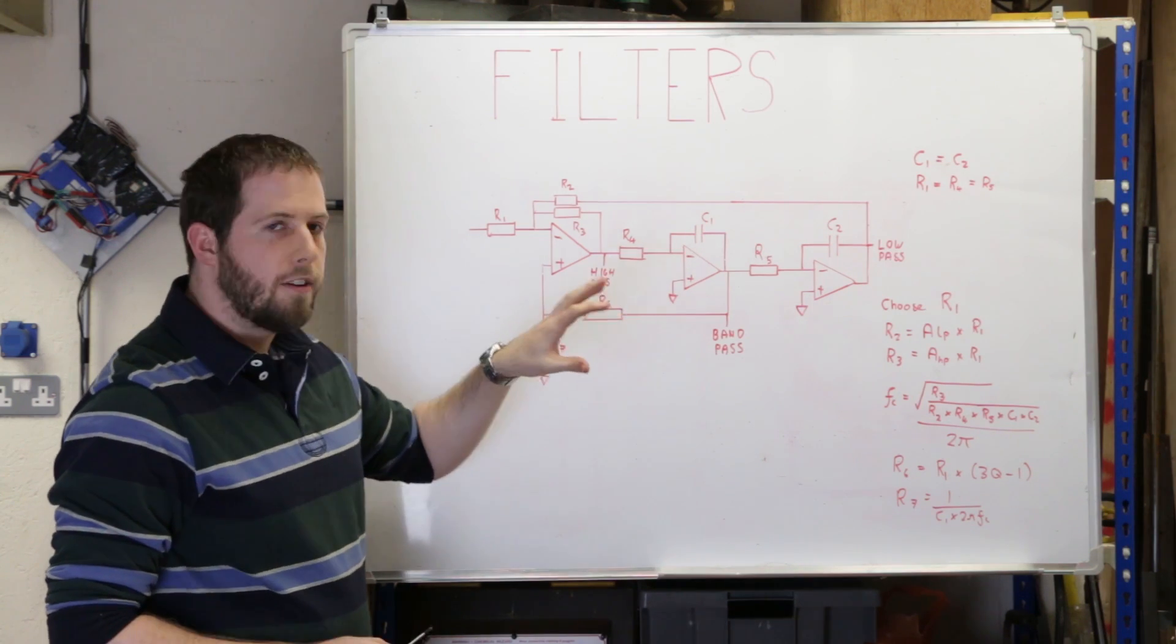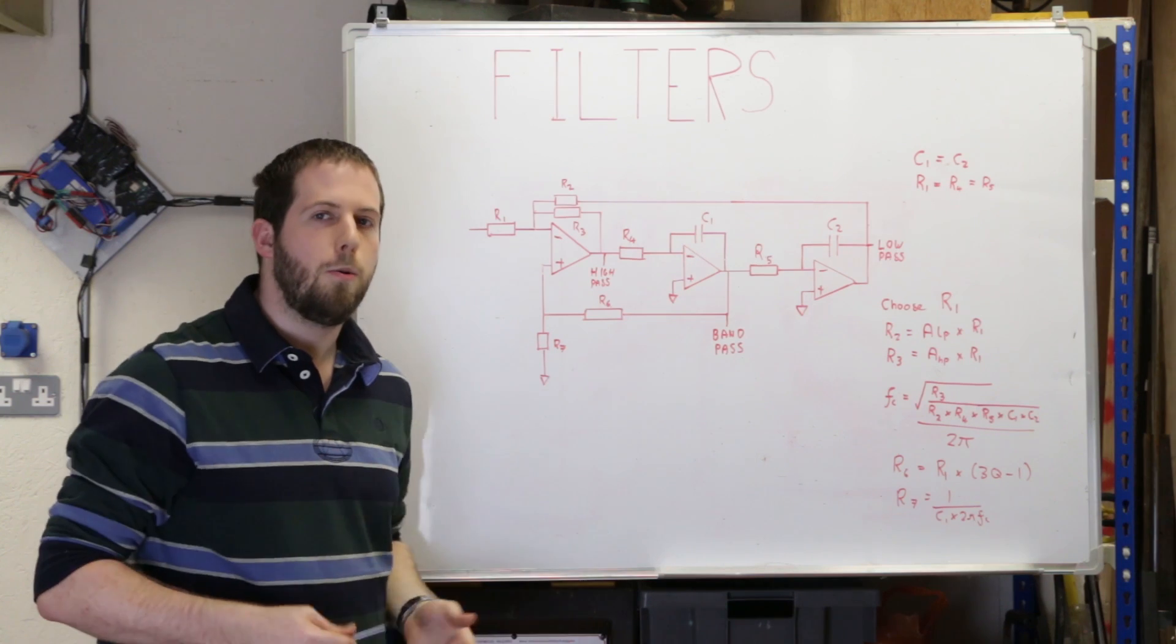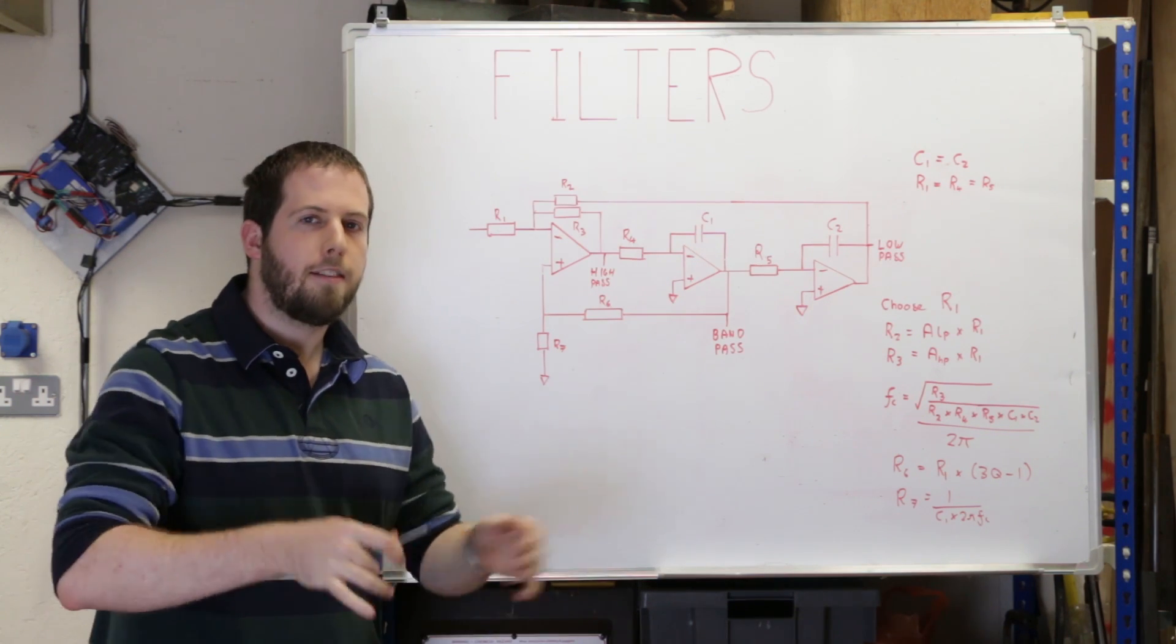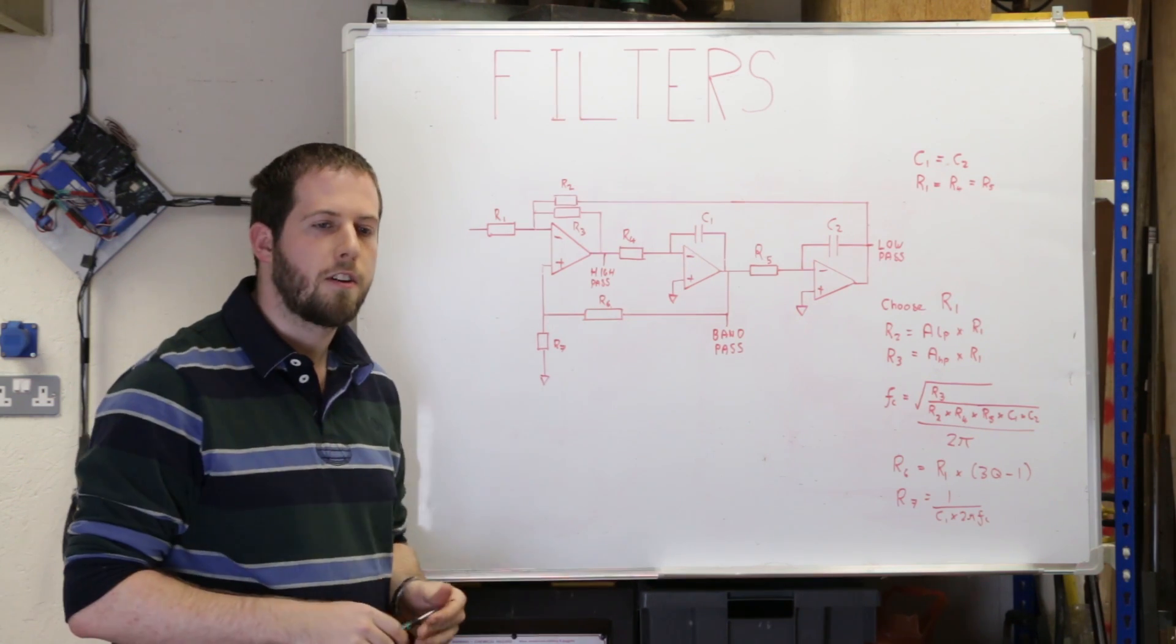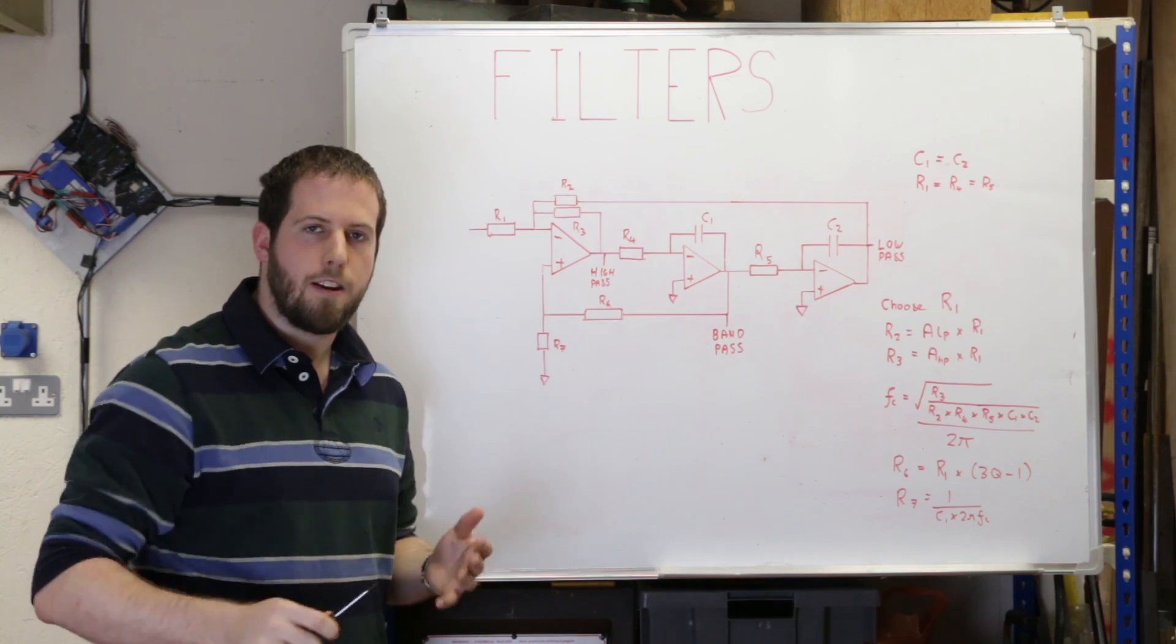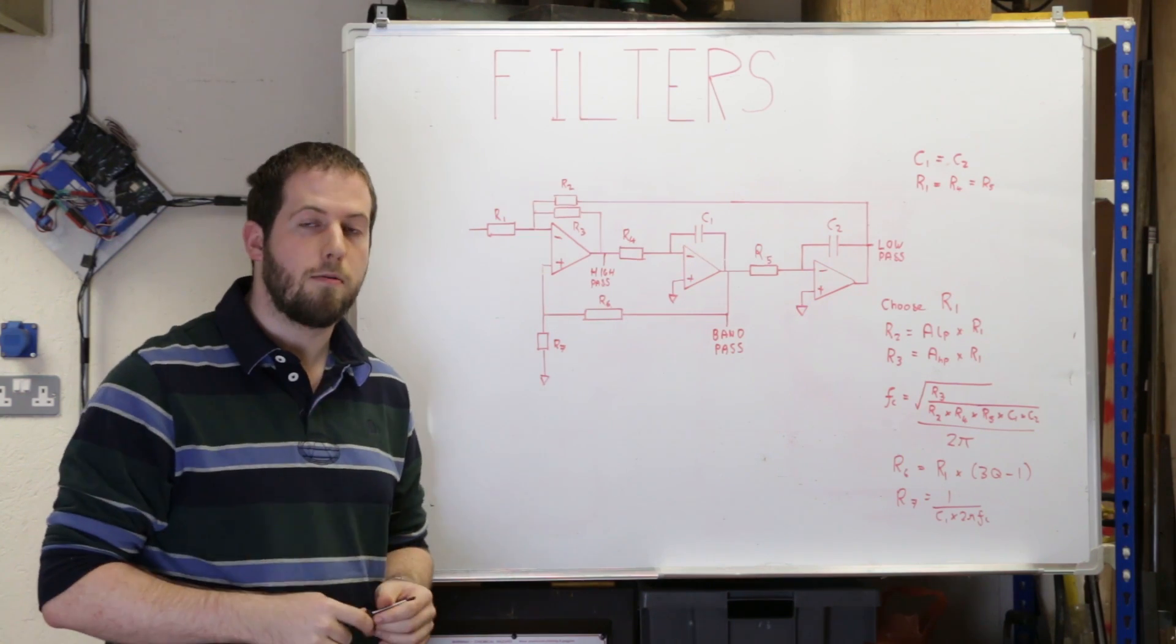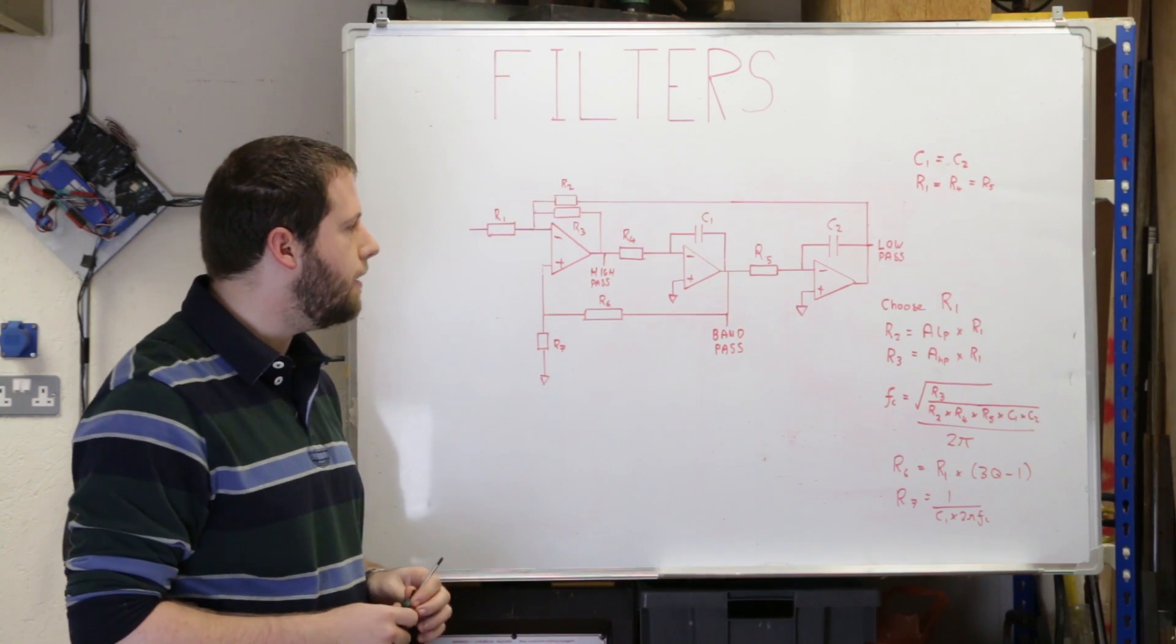We talked about changing the frequency. You can also change what's called the Q of the filter, which is basically similar to what we talked about with multiple stages or the number of poles which change how steep your roll off is. On here you can set the Q and again that sets how sharp your roll off is.